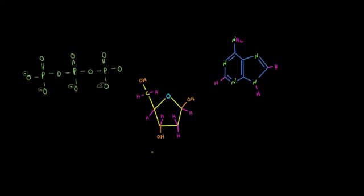The first is a sugar known as deoxyribose. And it's called deoxyribose because there's a sugar ribose that has an oxygen right over here, but deoxyribose doesn't have that oxygen.